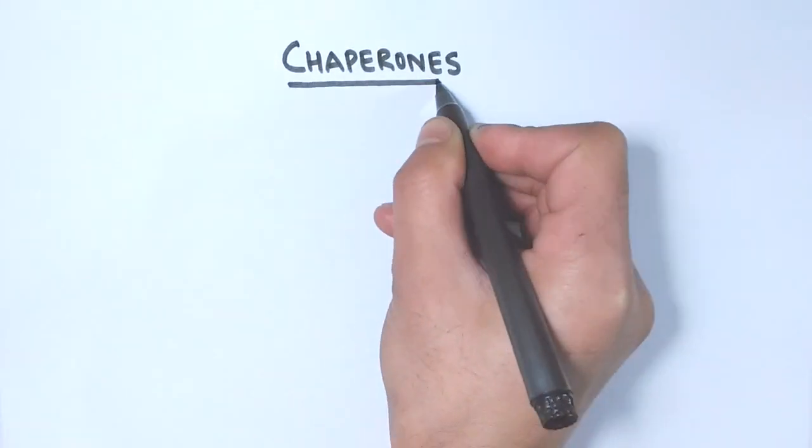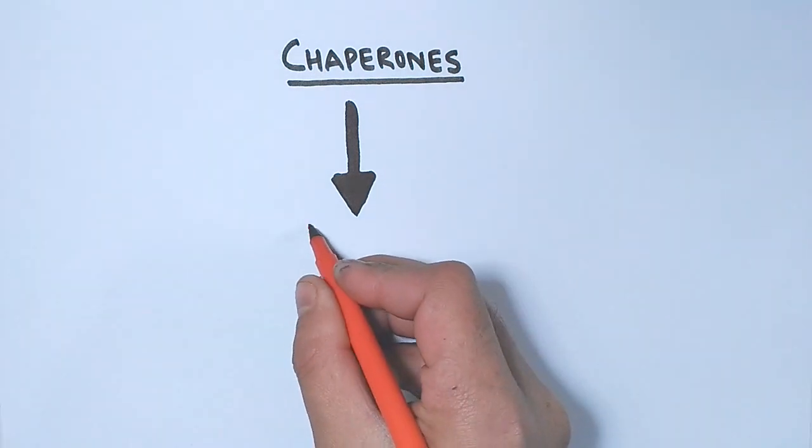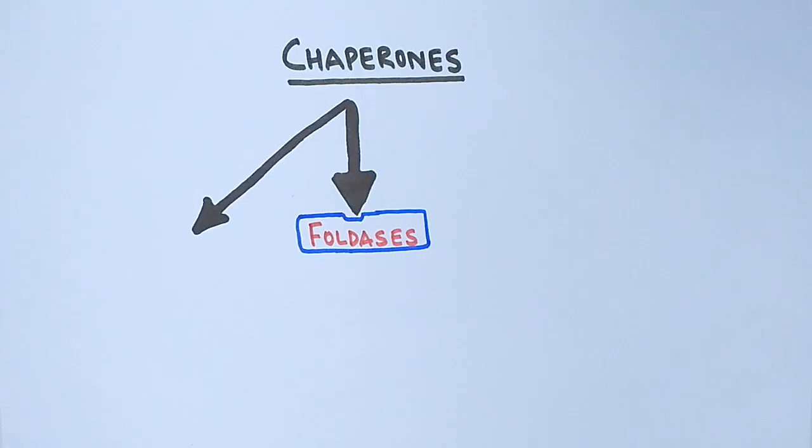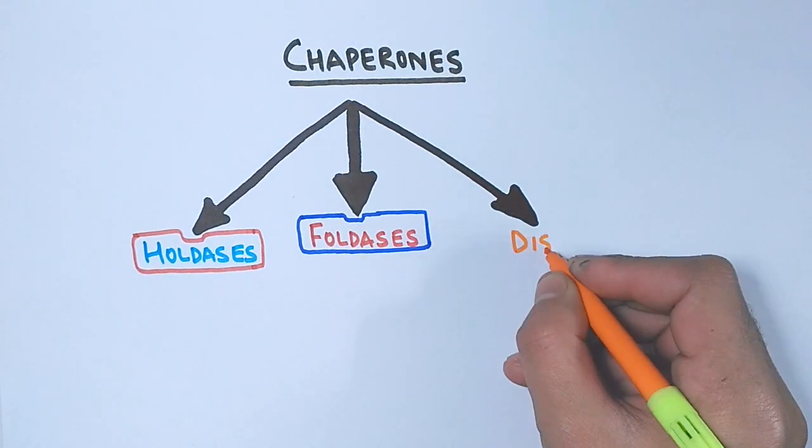On the basis of chaperone activity we categorize the chaperones into three classes. First one is the foldases, second one is the holdases, third one is the disaggregases.